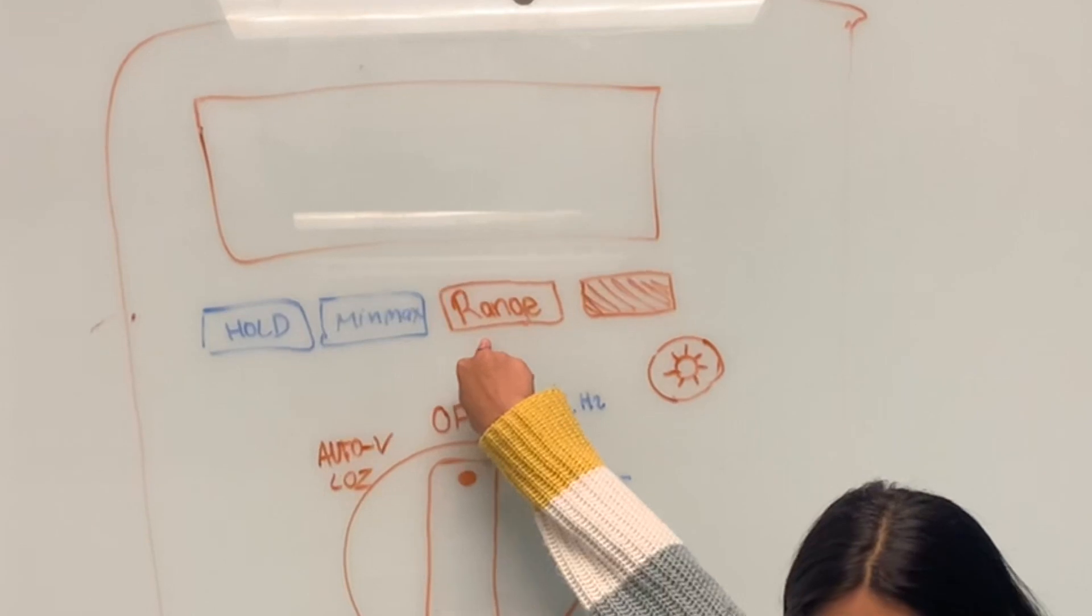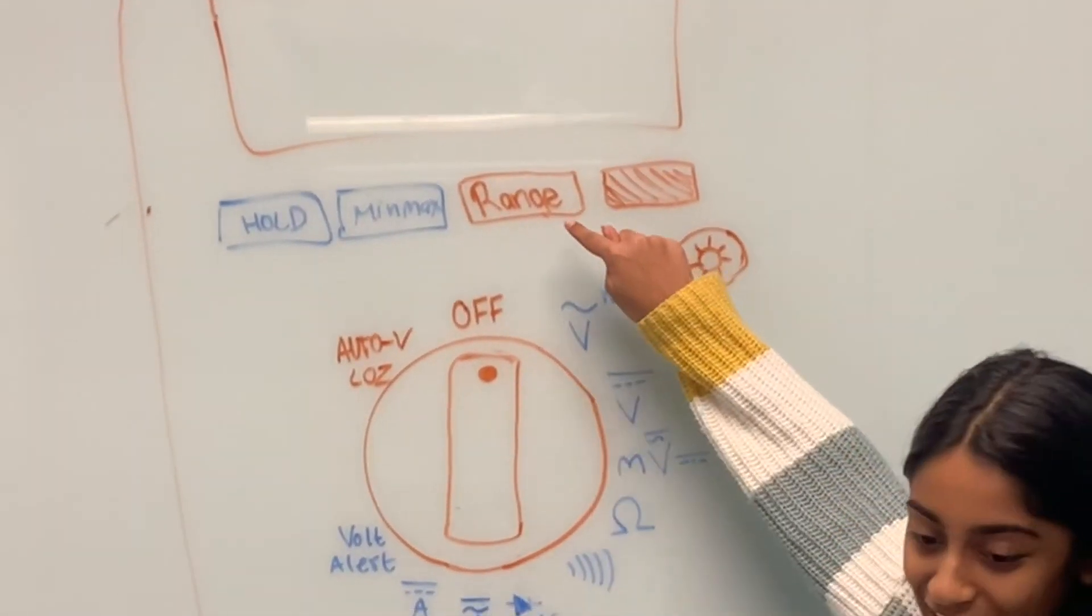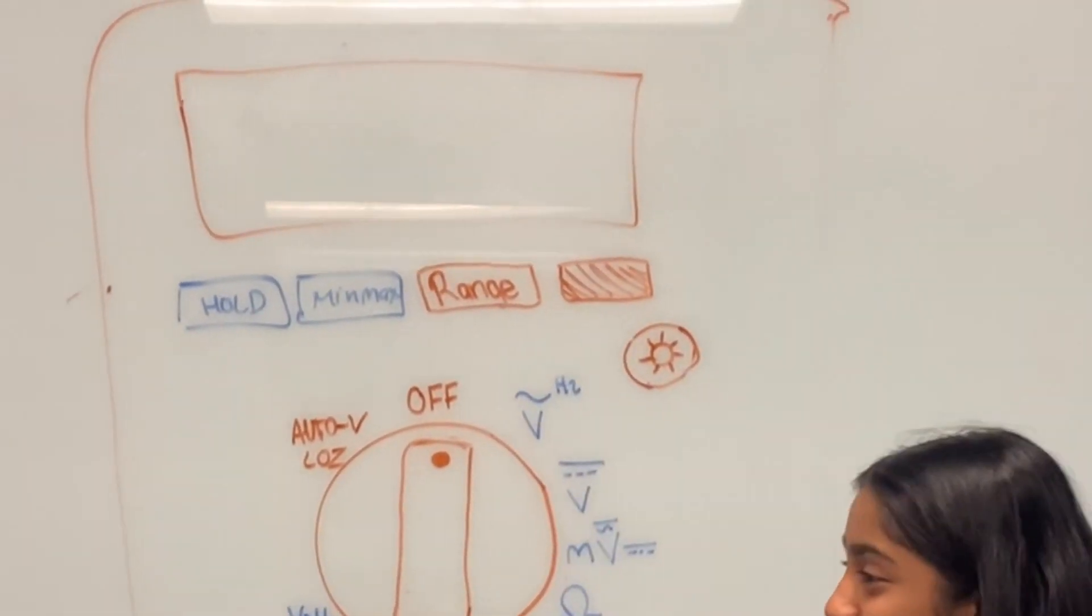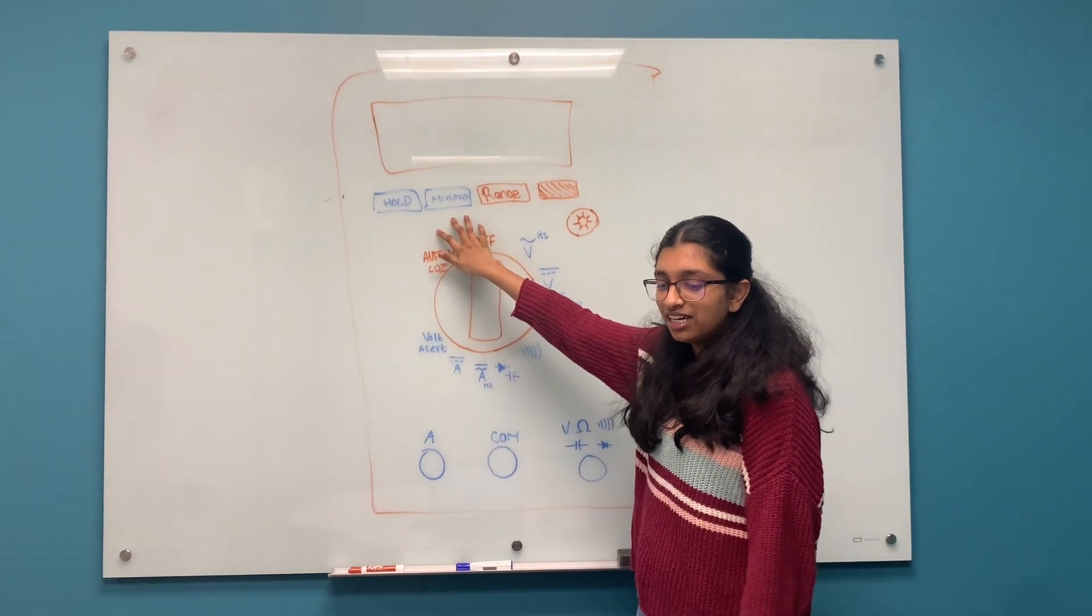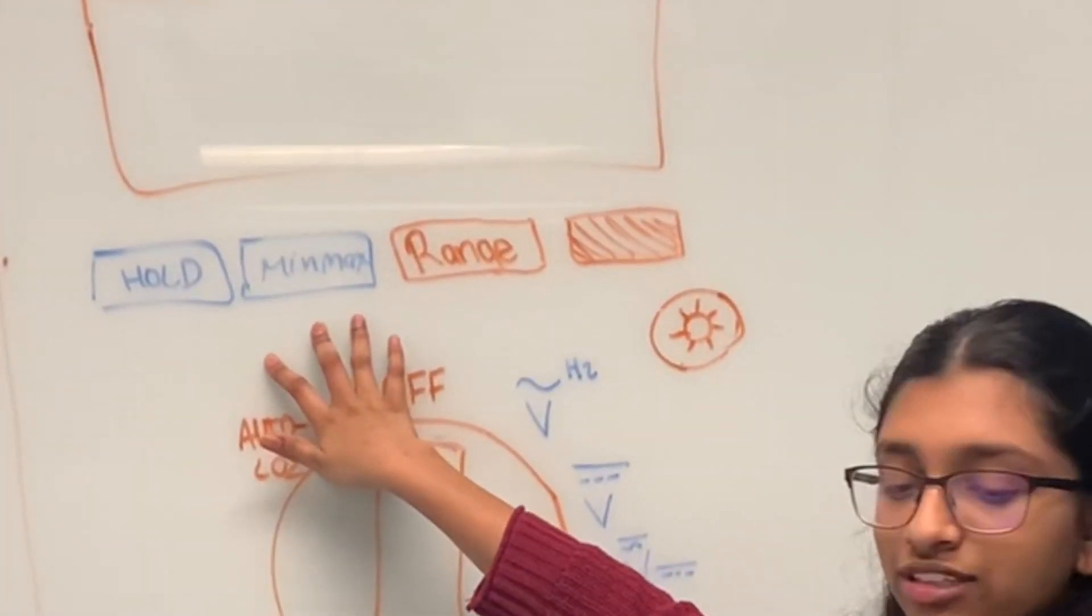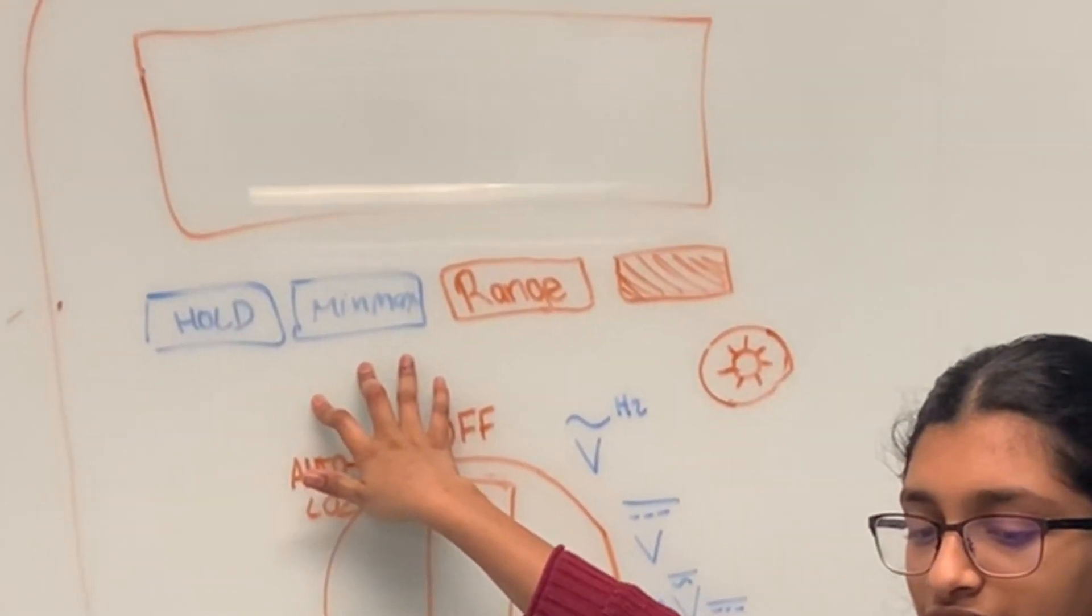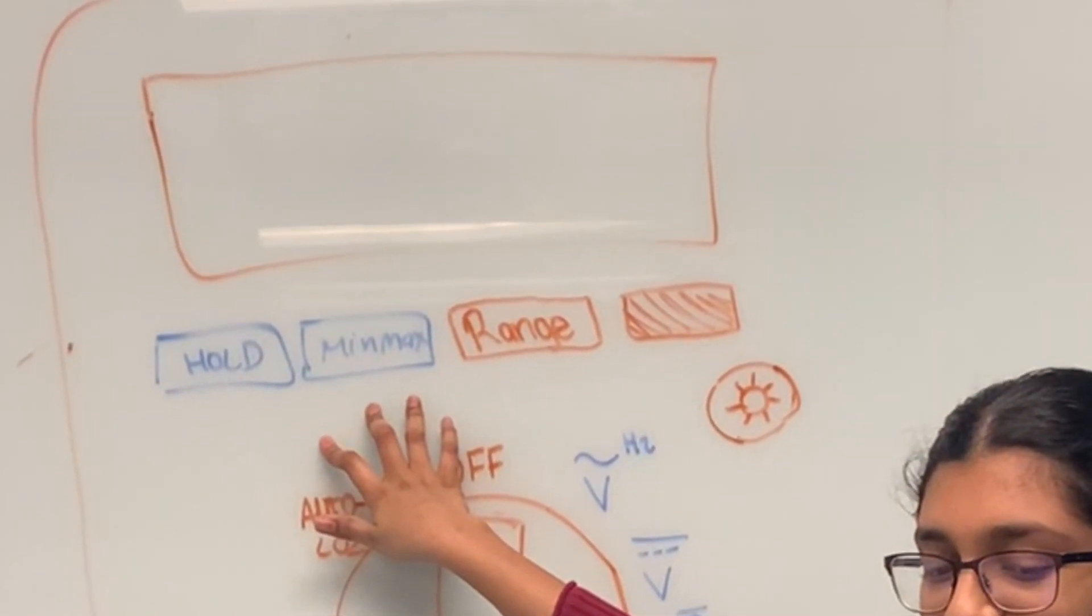The range button switches to manual mode and cycles through all the ranges of the multimeter. The min and max button stores input values and beeps when the value is breached and the new value is set.